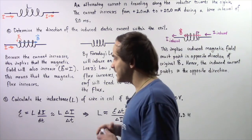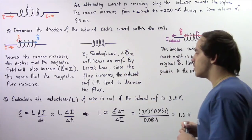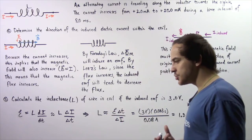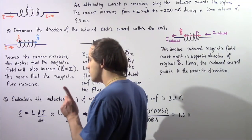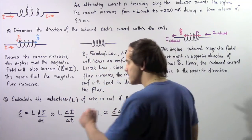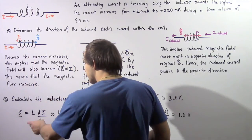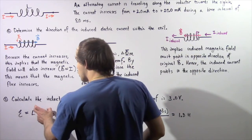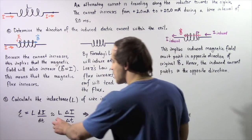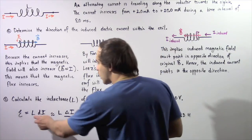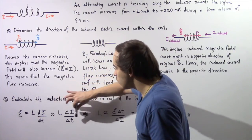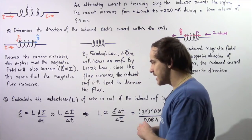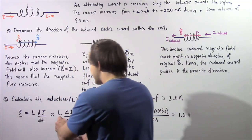Now let's move on to part B. We want to calculate the inductance L of the wire in the coil given that the induced EMF is 3 volts. Recall the relationship between inductance and induced EMF: the induced EMF within our coil equals the product of the inductance L and the rate of change of current with respect to time. For this case, this is approximately equal to L multiplied by the change in current over the change in time, Δi over Δt. Rearranging and solving for L, we get L ≈ EMF × Δt / Δi.